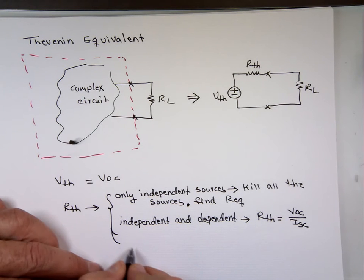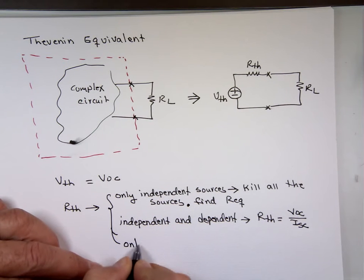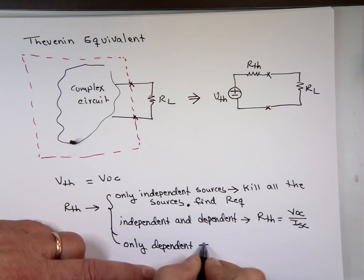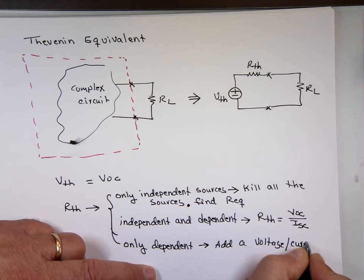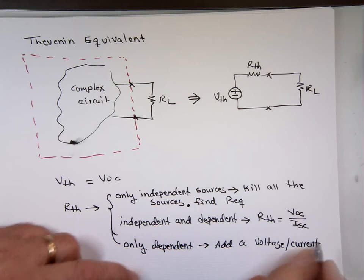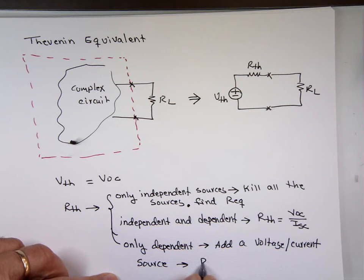And if your circuit has only dependent, we here apply a source, add either a voltage source or a current source, voltage or current source to the circuit. And R-Thevenin will be the voltage divided by the current using Ohm's law.